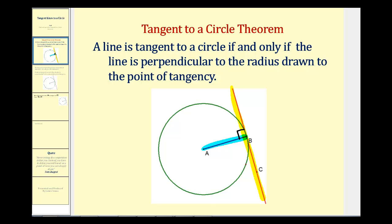Notice this is a biconditional or if-and-only-if statement. Therefore, it's also true that if the radius is perpendicular to a line that intersects the circle in one point, it must be a tangent line.